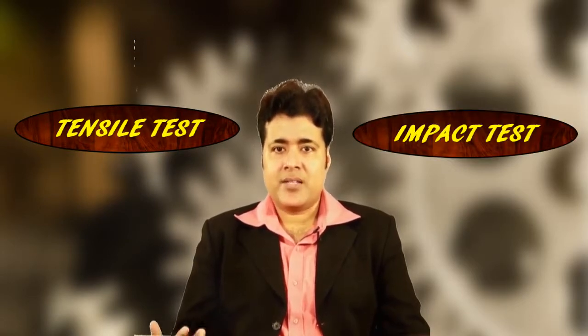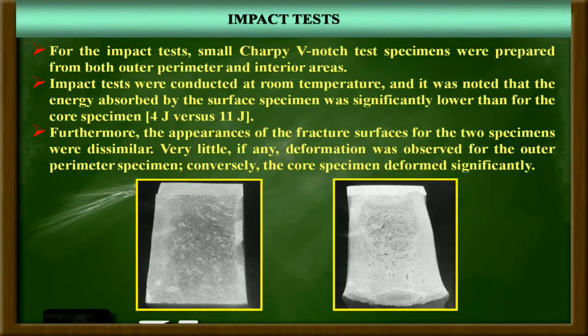Since the theory cannot yet be confirmed, we planned to collect more evidence on the loading conditions by performing both tensile testing at a slower strain rate and impact testing at a higher strain rate. First, we go for the Charpy impact test using V-notch specimens. The energy absorbed in the periphery region is quite low — approximately 4 joules — which is very low compared to 11 joules in the center or core region of the shaft. This means the periphery region of the shaft is much more brittle compared to the center region.